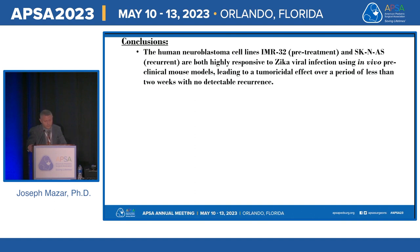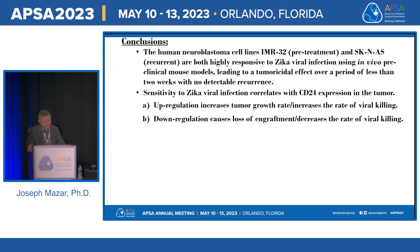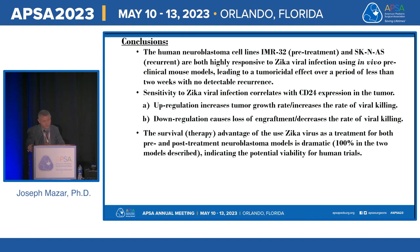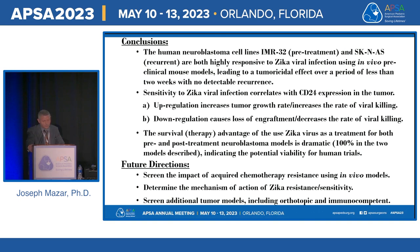Conclusions: both pre-treatment and post-treatment recurrent lines were sensitive to Zika virus, irrespective of chemotherapy resistance. Sensitivity appeared to be CD24-dependent, and CD24 upregulation in vivo was driven by the proliferative advantage it offers — but loss of that expression inhibited engraftment. The survival advantage to the host was virtually 100% in these models. Future directions include screening added chemotherapy resistance in vivo models, investigating the mechanism of Zika resistance and sensitivity, and performing more advanced modeling with humanized mouse immune systems and PDX models.